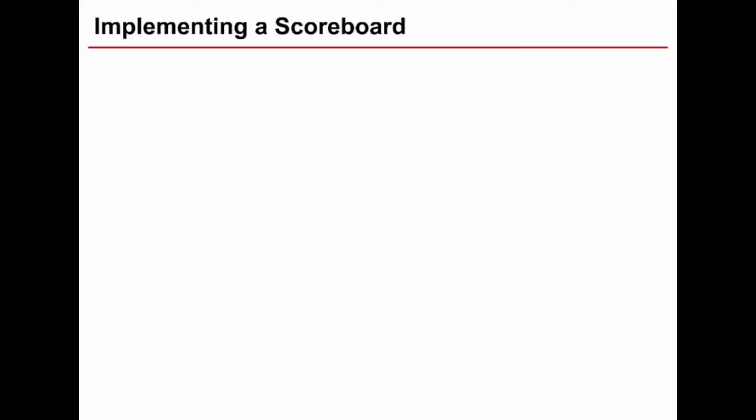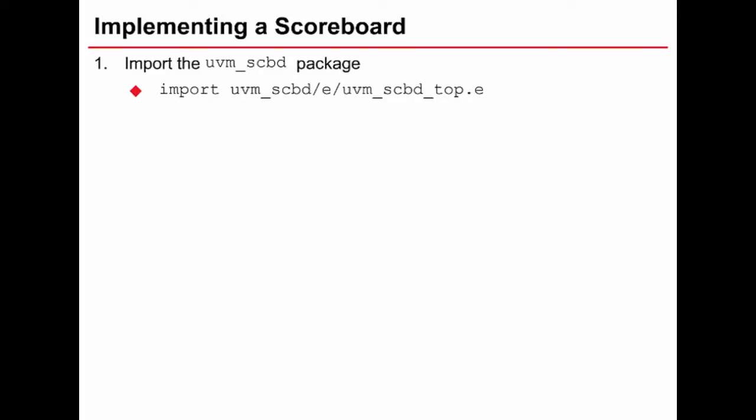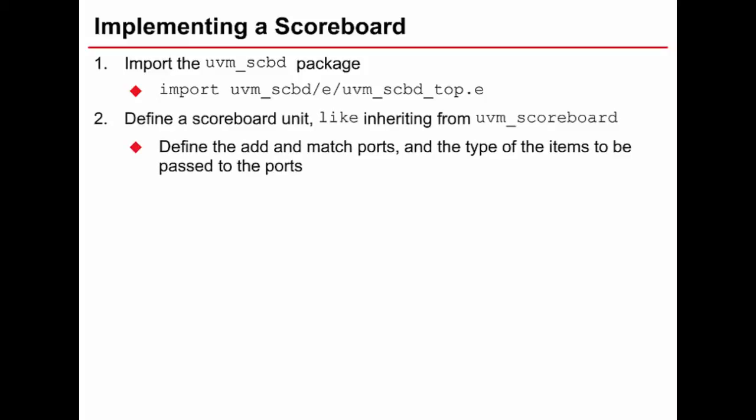The steps taken to implement the code for the UVM-e scoreboard will be shown on the slide. The first thing we need to do is import the scoreboard package, and we do that by using this import statement. In your tool, the Specman path will be set already to the location where that file is located.